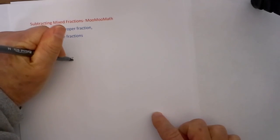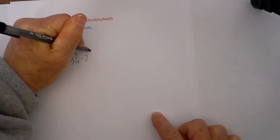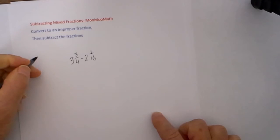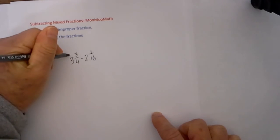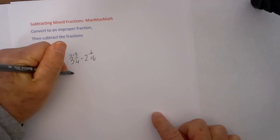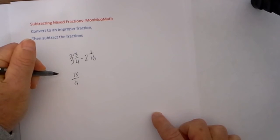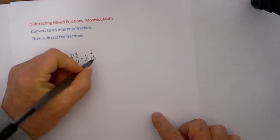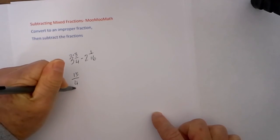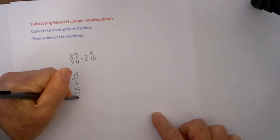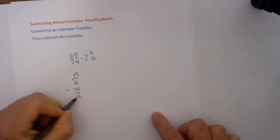Let's work one last example: 3 and 3 fourths minus 2 and 1 sixteenth, and convert them to improper fractions. 4 times 3 is 12, plus 3 is 15 over 4, and then we will subtract that from 16 times 2 is 32, plus 1 is 33 over 16. Now I need to find a common denominator, and that is 16.